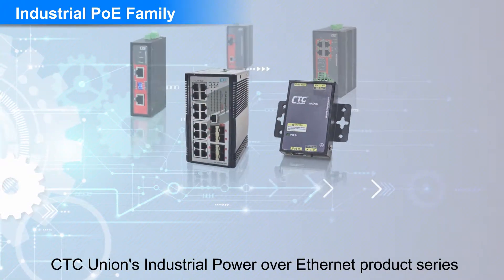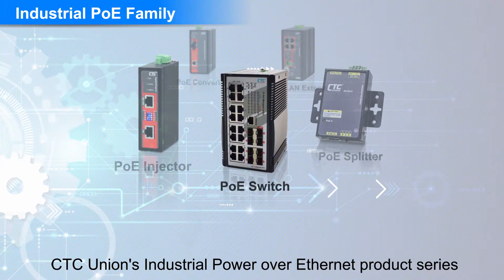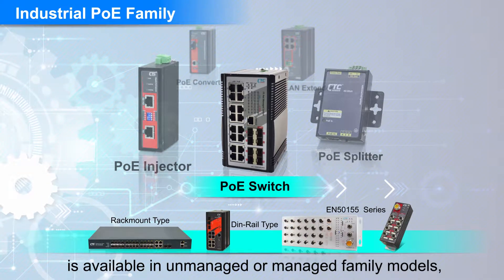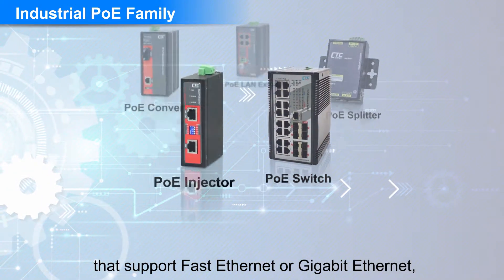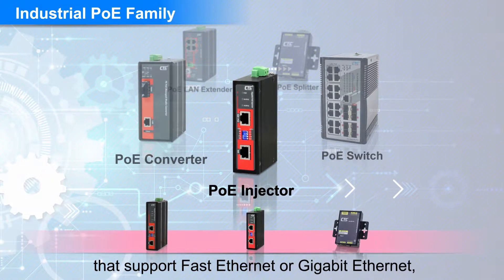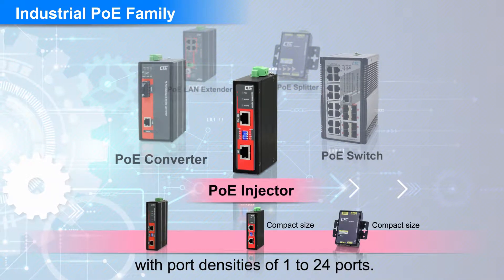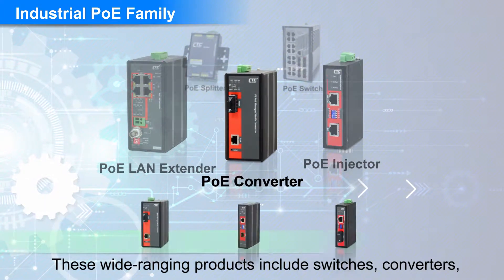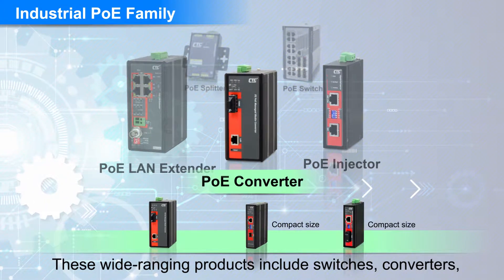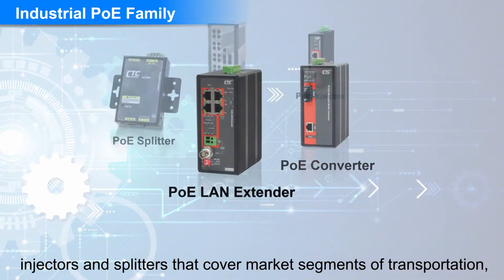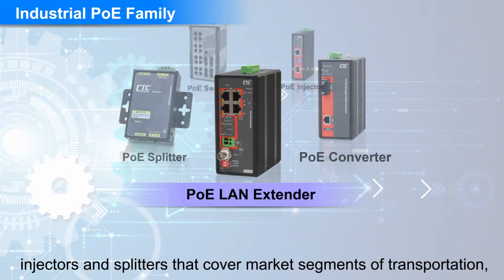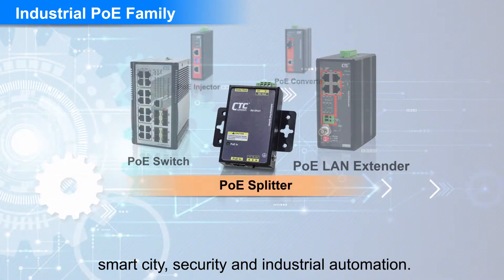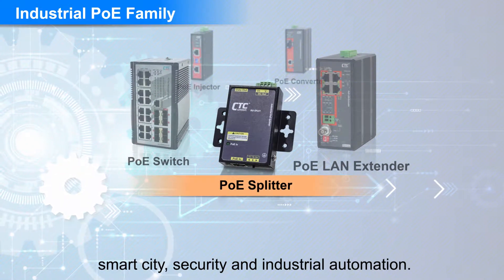CTC Union's Industrial Power over Ethernet product series is available in unmanaged or managed family models that support Fast Ethernet or Gigabit Ethernet, with port densities of 1 to 24 ports. These wide-ranging products include switches, converters, injectors, and splitters that cover market segments of transportation, smart city, security, and industrial automation.